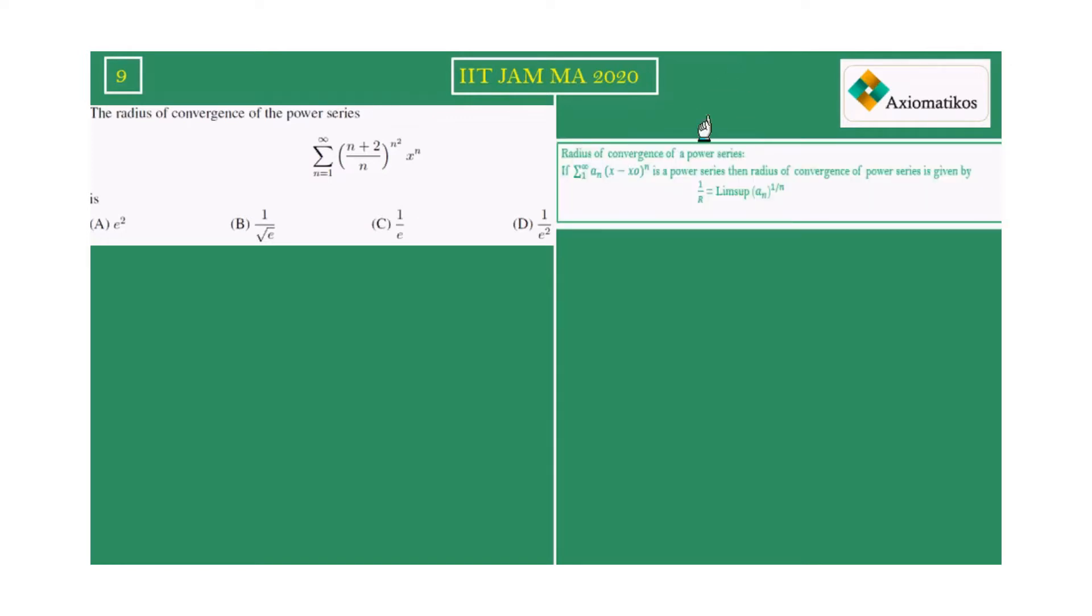What this note suggests is that if we have a power series, then the radius of convergence is given by 1 over r equals lim sup of a_n to the power 1 by n. This is a very important result regarding the convergence of the power series. So let us begin.